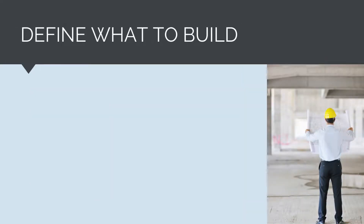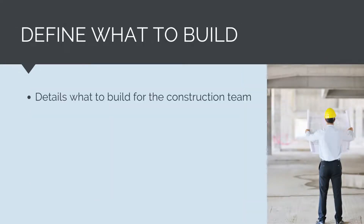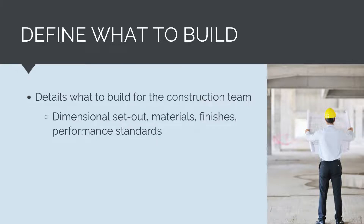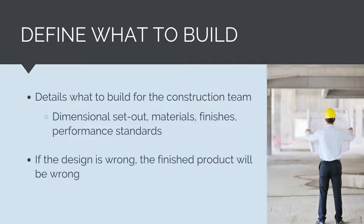The design defines what to build. It should detail for the construction team everything they need to know so they can properly deliver the project. The design will contain everything they need to know, including dimensional set-outs, materials to use including specific products, finishes and performance or technical standards. If the design is wrong, the finished product will also be wrong — unless, of course, the construction team are able to pick up and resolve the design issue before it is constructed.